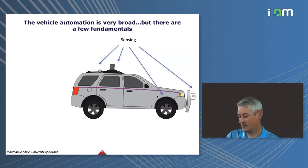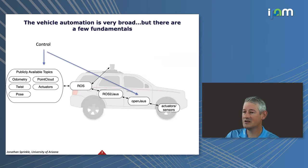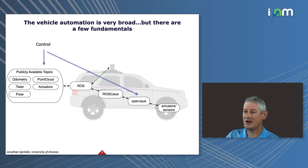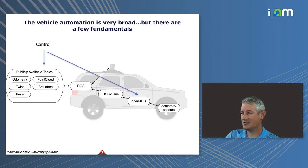On the control side, there are several layers of interaction you might see with a particular vehicle, whether it's a research test bed or a vehicle you buy off the shelf with level two or level three automation. There will be some hierarchy of data acquisition and control, and understanding what that hierarchy is like is important when it comes to extracting the data as well as injecting data so that the vehicle will do what you want it to do.